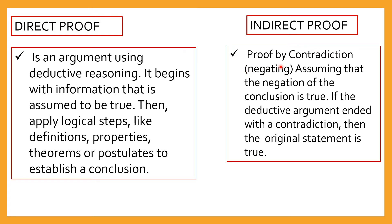Indirect proof is a proof by contradiction — assuming that the negation of the conclusion is true. For example, if the conclusion is x is equal to 5, then you assume that x is not equal to 5. If the deductive argument ends with a contradiction, then the original statement is true. So the first statement and the last statement should be opposite and contradict each other.